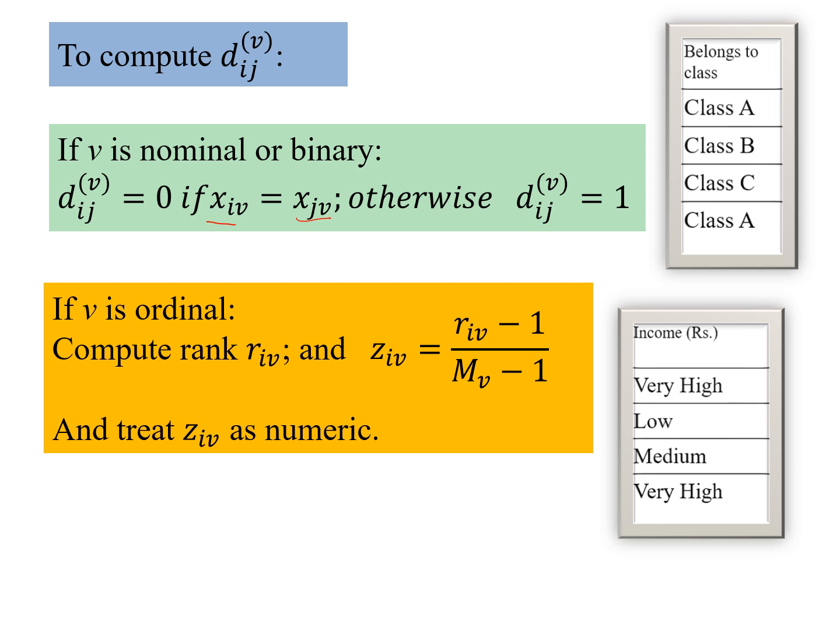So here we have a nominal attribute. And so if we look at these two data points, so the distance is 1. But for the first and the last, where both the data have the value as class A, then the distance would be 0. So this was for the nominal. And the same would happen for the binary.